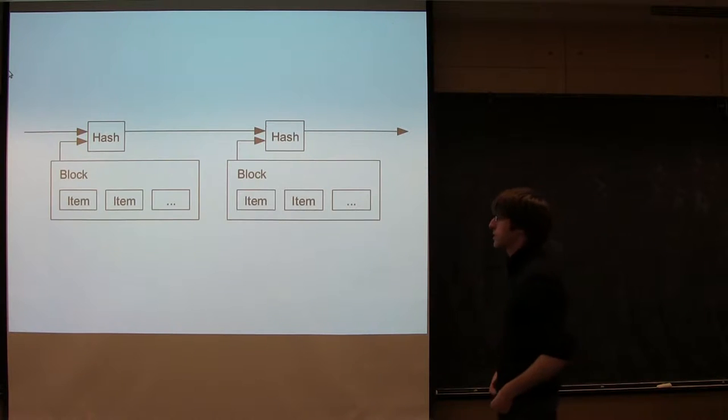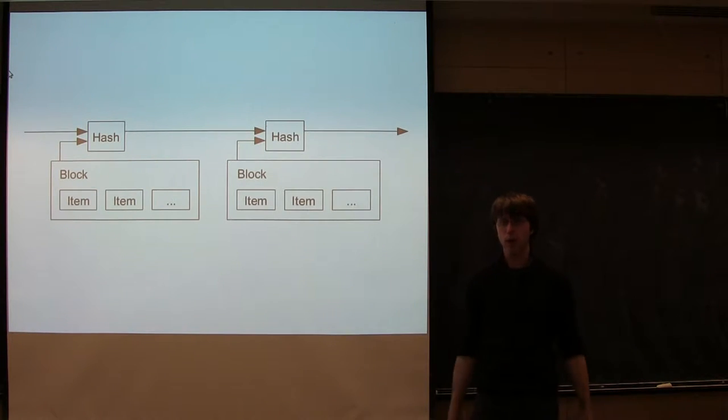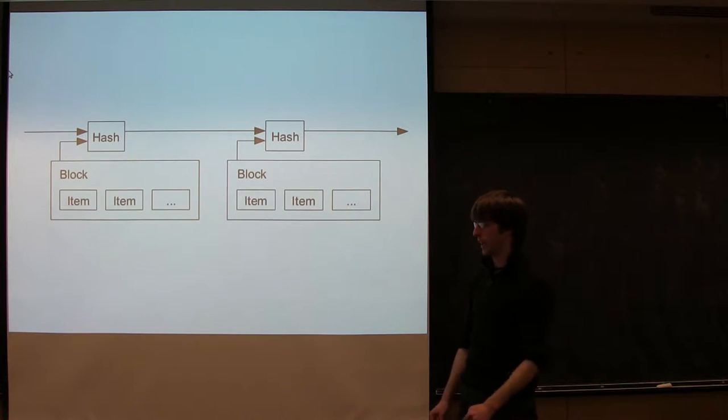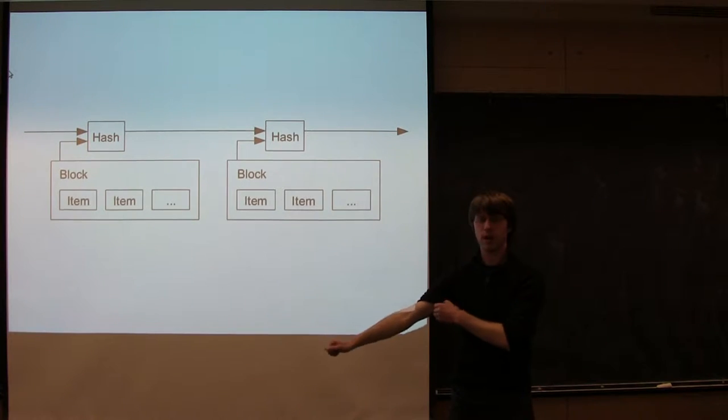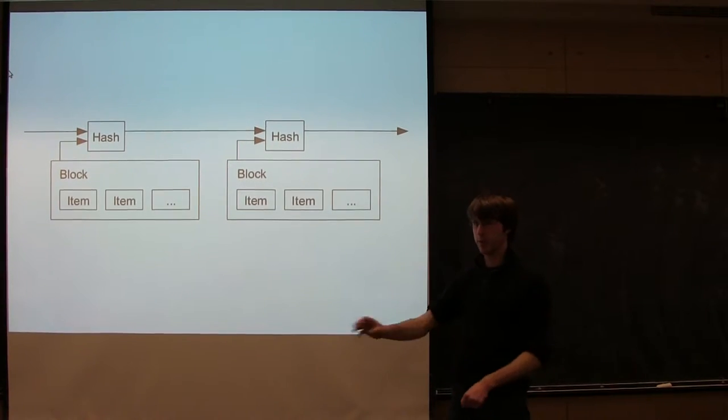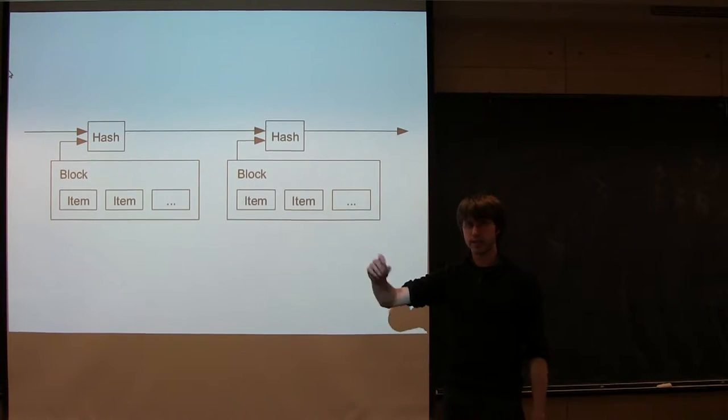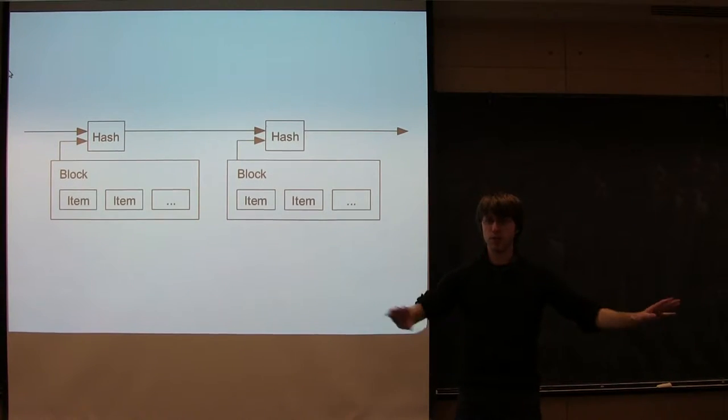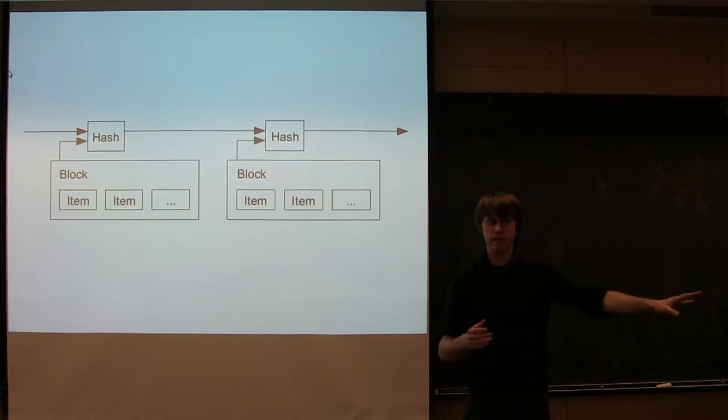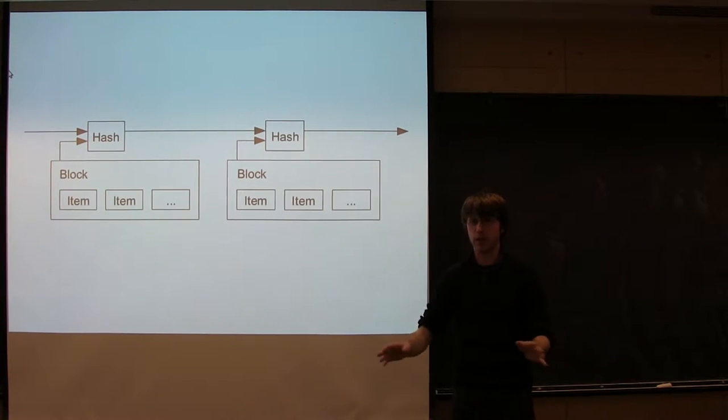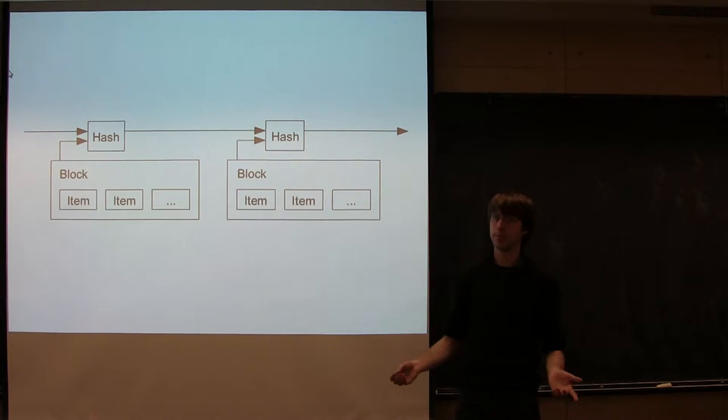This solves the problem, but it relies on this centralized entity, which has a number of problems. It's a single point of failure. It's a single person you have to be comfortable with knowing about every transaction on the planet. There's a privacy issue here. And there's just a load issue—can this scale? Can you ever possibly have one person or one entity that's in charge of maintaining, if this ever became the only global currency, could that even scale? We want a solution that doesn't involve this central entity. And that's where Bitcoins come in. There are distributed solutions to this problem, and what they basically involve is building a distributed timestamp server.